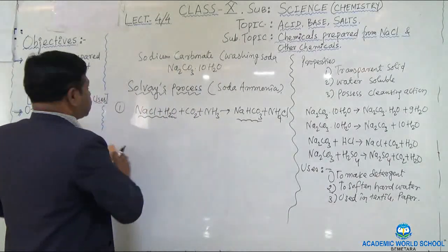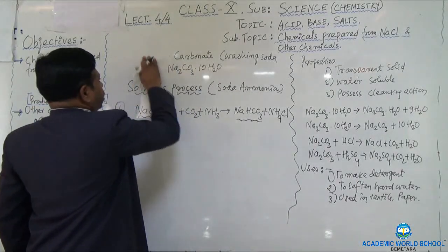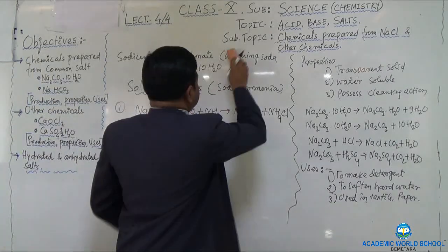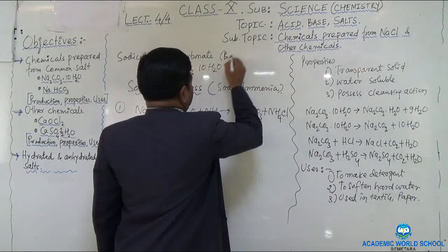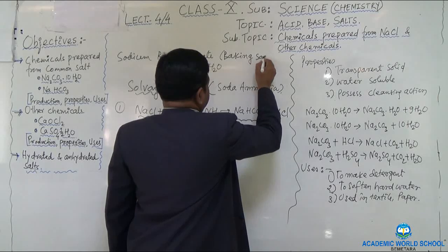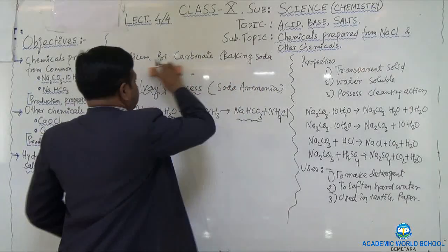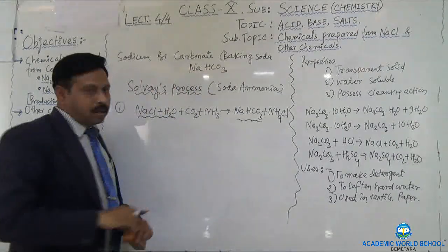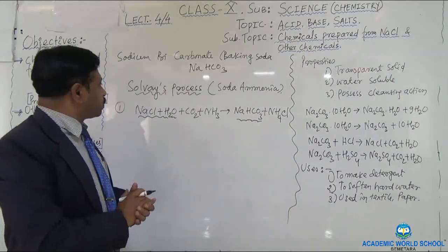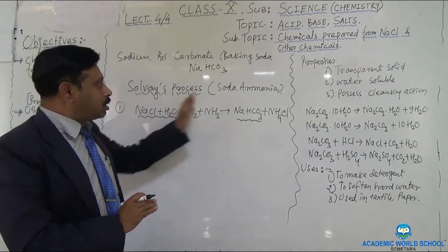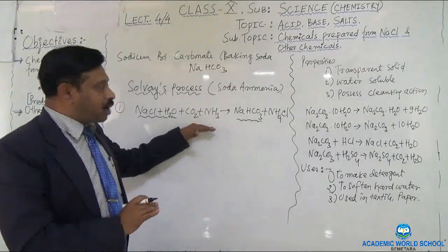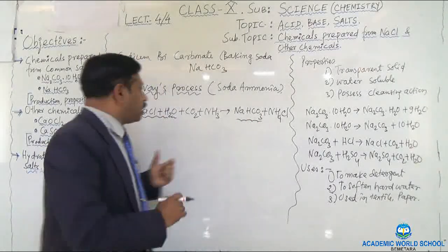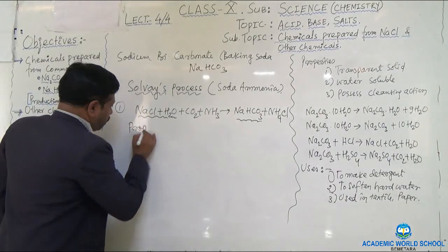Next, I want to explain sodium bicarbonate — its preparation, properties, and uses. For sodium bicarbonate, the preparation method is simple: you repeat the soda ammonia process, taking the brine solution and passing carbon dioxide and ammonia gas through it to get sodium bicarbonate. We only do the first step of the Solvay process, since that step gives us NaHCO₃.